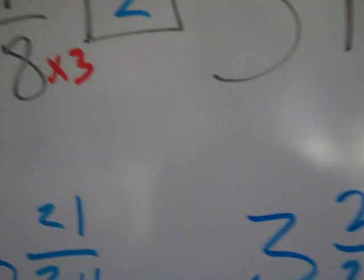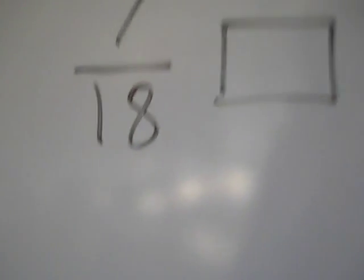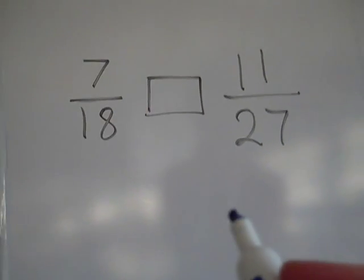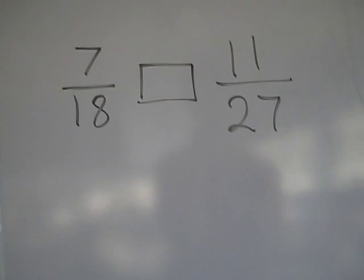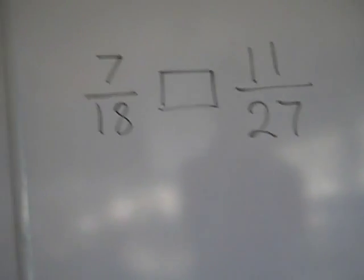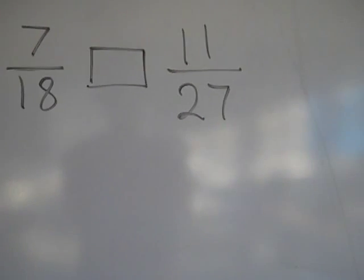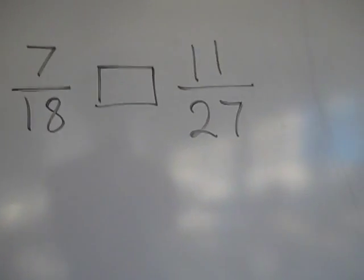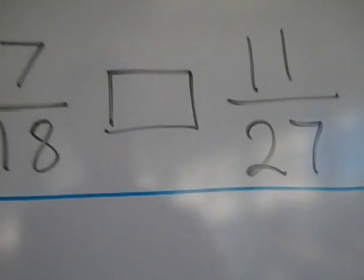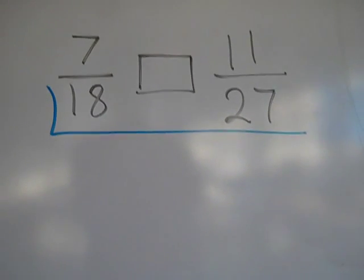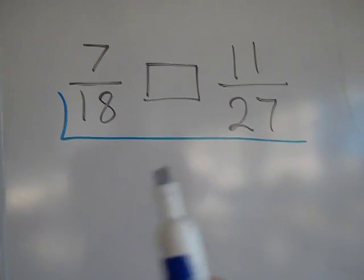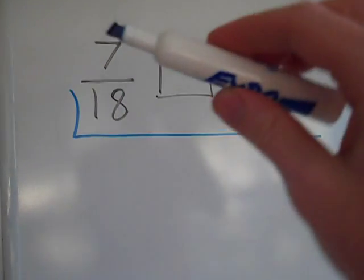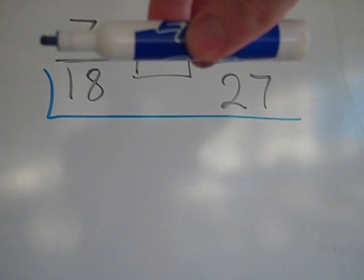Now in the next example your minds may be blown. Here I have seven-eighteenths and eleven-twenty-sevenths. This is an example where, when you look at the denominators, it's very hard to think of multiples that work. So I'm going to use the division ladder — I've used this to find least common multiple, and now I'm going to use it to find the least common multiple of just the denominators. I'm going to put eighteen and twenty-seven into a division ladder, completely ignoring the numerators.